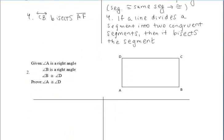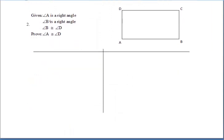Let's take a look at the next example. This next proof says that angle A is a right angle, angle B is also a right angle, and angle B is congruent to angle D. If angle B is congruent to angle D, that must mean angle D is a right angle as well since B is. But keep in mind, we have to write down a lot in our proof to make sure it flows logically.